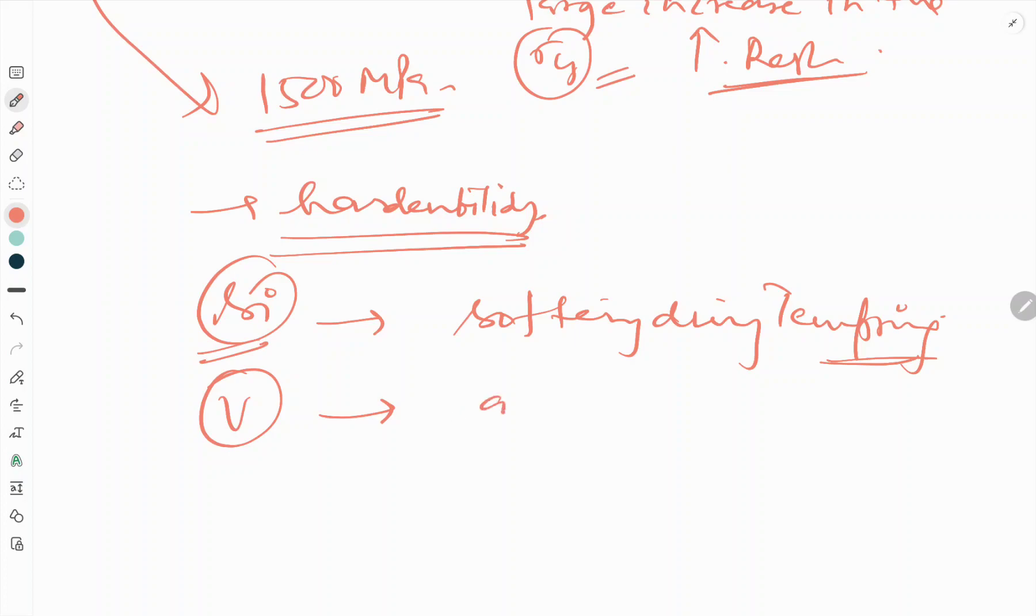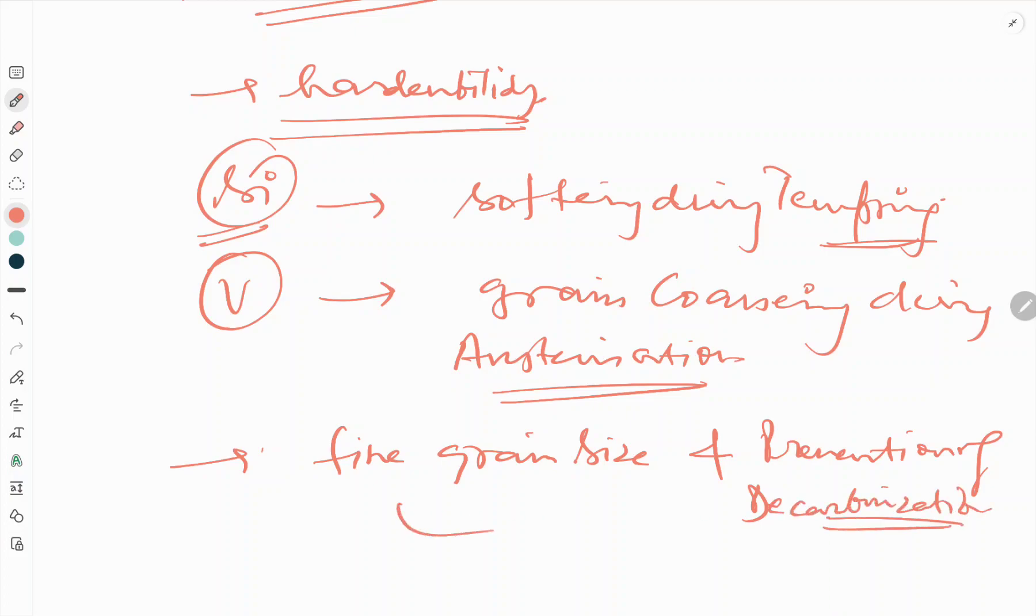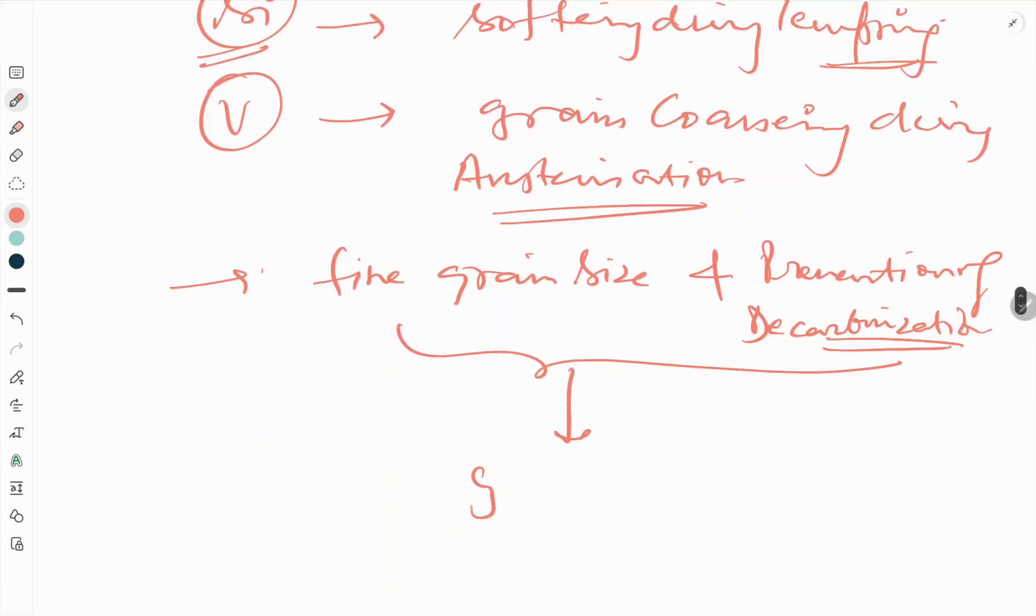Vanadium prevents grain coarsening during austenite digestion and improves the toughness of the steel. A finer grain size and prevention of decarburization during heat treatment ensures a good fatigue strength.